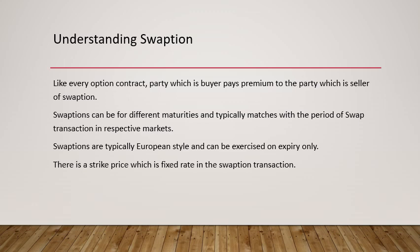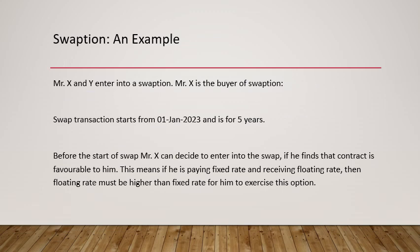In an interest rate swap there are two rates — fixed and floating. The strike price is the fixed rate. For example, Mr. X and Y enter into a swaption. Mr. X is the buyer and Y is the seller. Mr. X pays a premium to Mr. Y and a strike rate is fixed between the two. The swap transaction starts from 1st January for five years. Mr. X must decide whether to enter into the swap, for which he has purchased the swaption. Before the swap starts, he can decide whether to enter or not. If the contract is favorable he will enter; otherwise he will let the swaption expire.